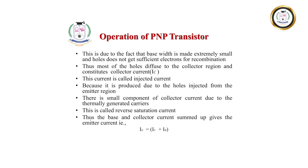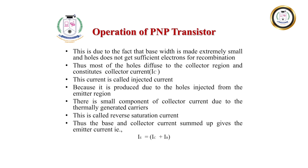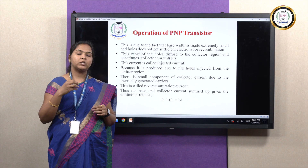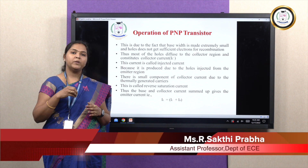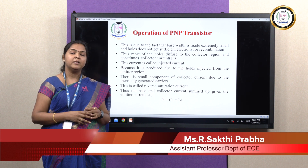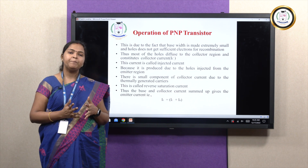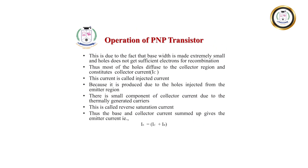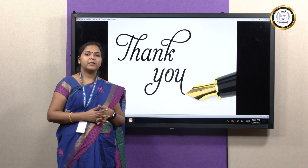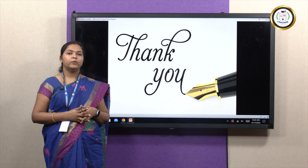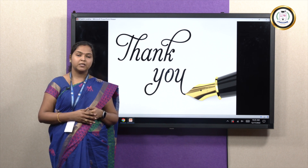The transistor current equation is denoted as IE = IC + IB — how much charge carrier, whether electrons or holes, has been emitted by the emitter region, the same exact amount has been completely collected by the collector region. In the upcoming session, we will be looking into the further continuation of this bipolar junction transistor, which is the transistor configuration. Thank you.